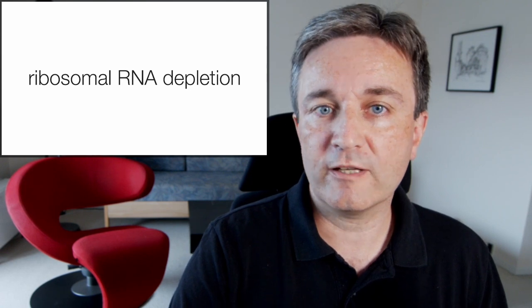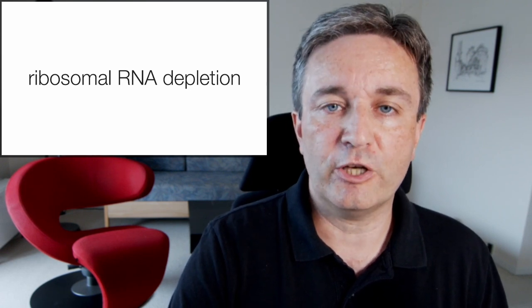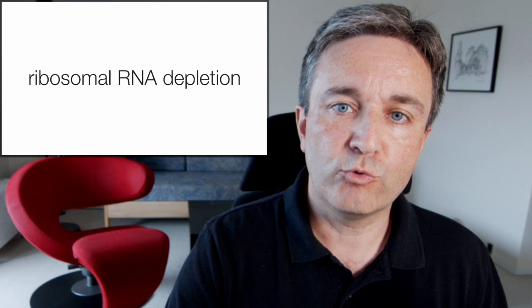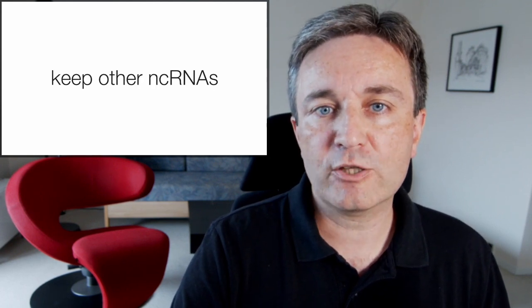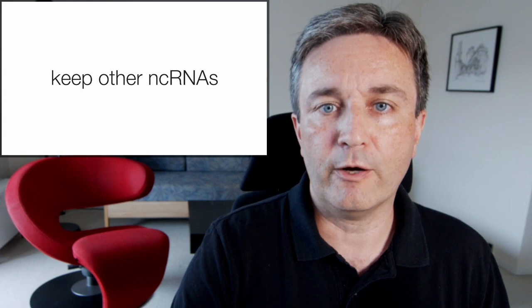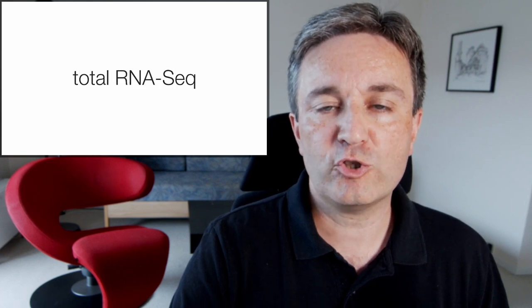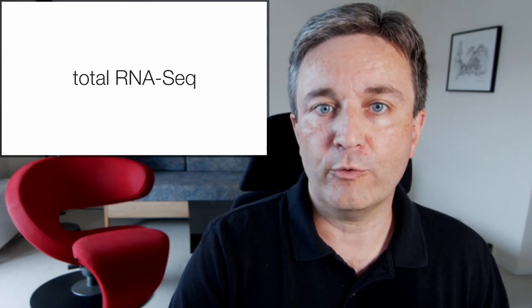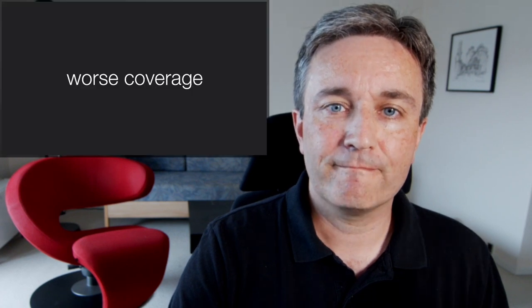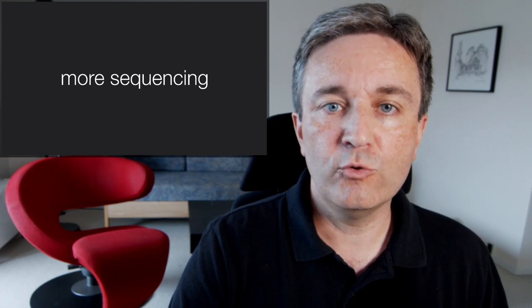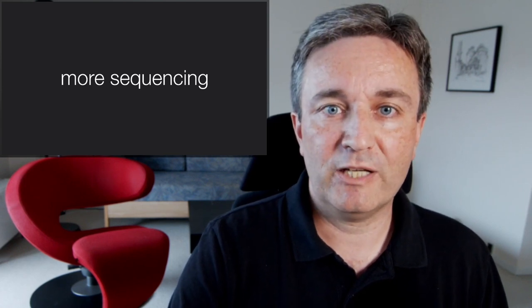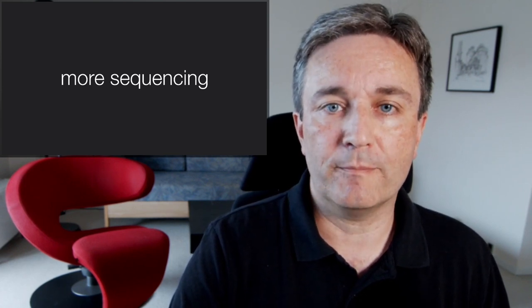The alternative, and the method of choice if you're interested in non-coding RNAs, is to do ribosomal RNA depletion. This eliminates the ribosomal RNAs, but allows you to keep the other non-coding RNAs. It's therefore known as Total RNA-Seq, since you're not only measuring the mRNAs. However, this approach gives you worse coverage, and the only way to deal with that is to do more sequencing on each sample. In other words, throw more money at the problem.